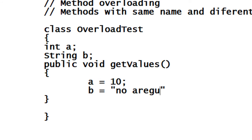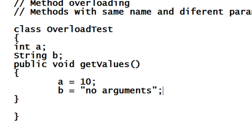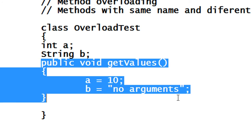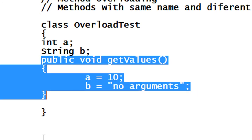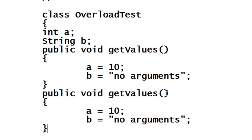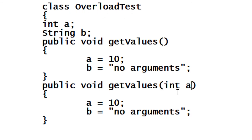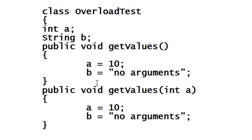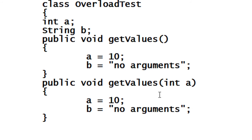This first version has no arguments. Again I am using the same method name but changing the argument in that method. Here you can see the names of the methods are the same — there are two methods with the same name but a difference in arguments. This is called method overloading.